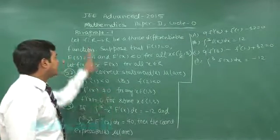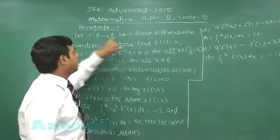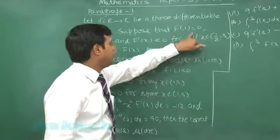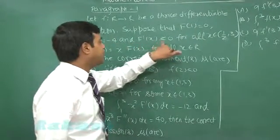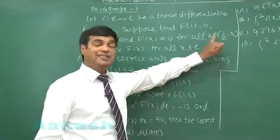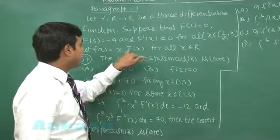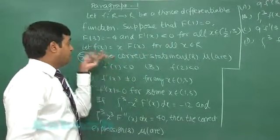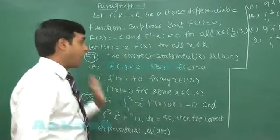Let us try the next one, this time from the paragraph. Let f from R to R be a thrice differentiable function. Suppose that capital F of 1 is 0, capital F of 3 is minus 4, and f dash x is negative for all x in the interval half to 3. Let f(x) equals x into capital F(x) for all x from the real numbers.